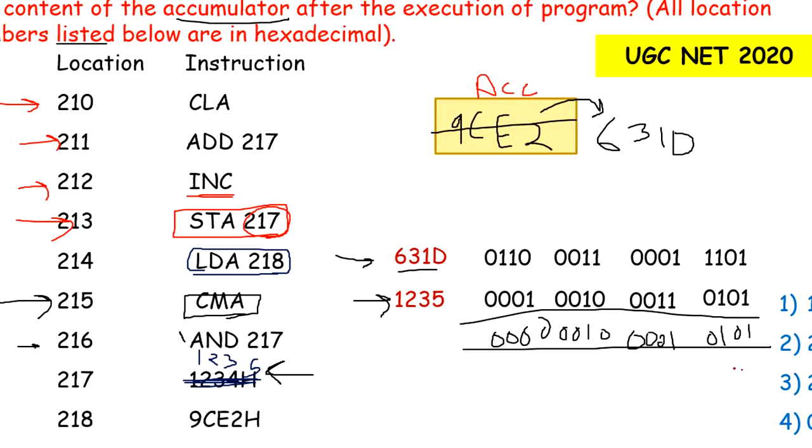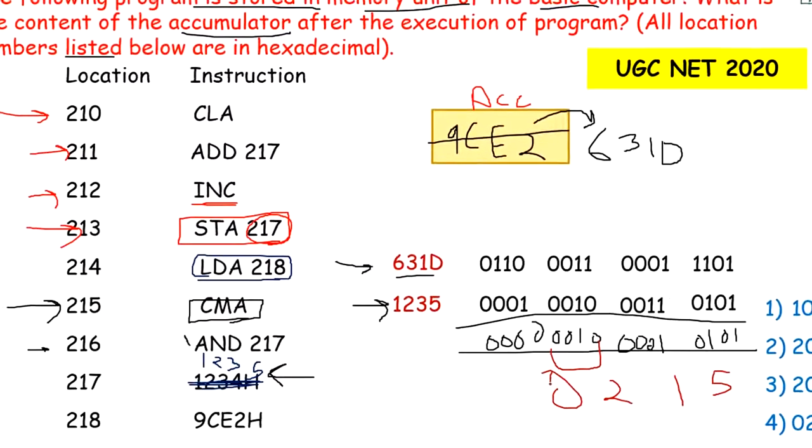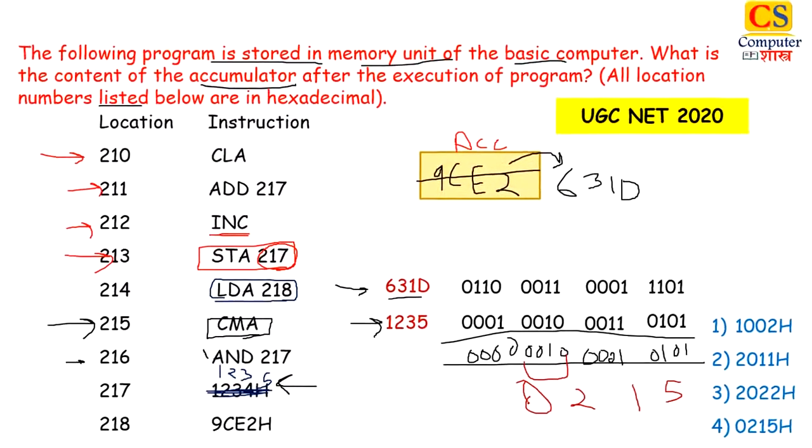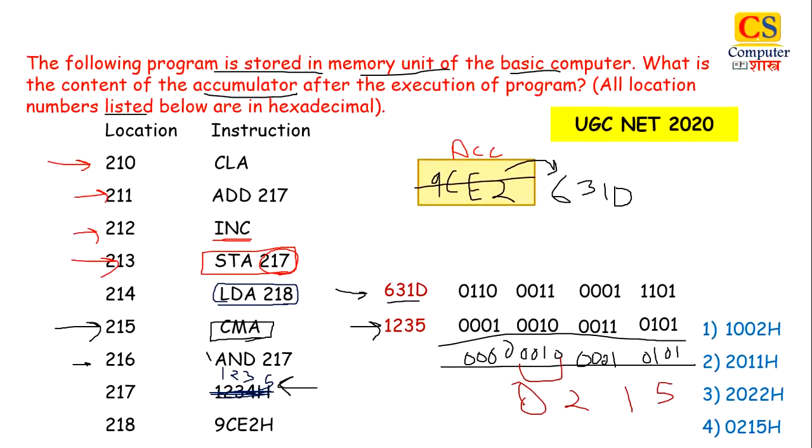AND operation is done. Now convert back to hexadecimal because the answers given in the options are in hexadecimal. 0101 will be 5, 0001 will be 1, 0010 will be 2, 0000 will be 0. So your hexadecimal number will be 0215. If you check all the options, you will see that your right answer will be option 4.